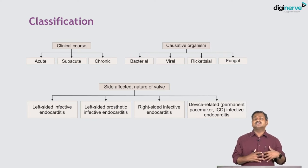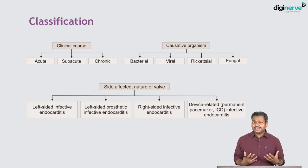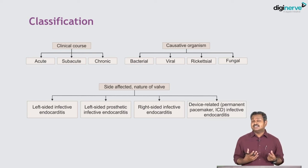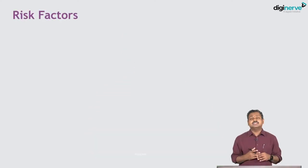Understanding these classifications is important because acute endocarditis is caused by more virulent organisms; fungal endocarditis is difficult to treat; device-related endocarditis may require device removal; prosthetic valves may need replacement; and right-sided endocarditis involving the tricuspid valve is more likely in IV drug abusers. The organism and management approach differ based on the type of endocarditis.